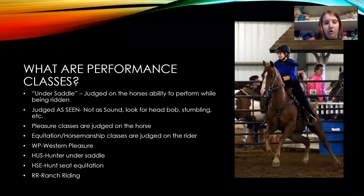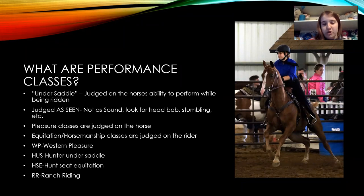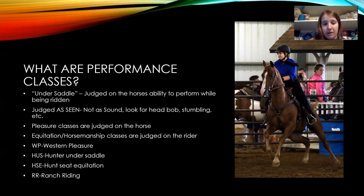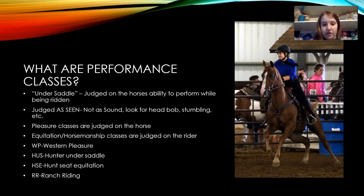There are different types of performance classes. You mainly have your pleasure classes and your equitation classes. Pleasure classes are based on the horse and how the horse is moving, whereas equitation and horsemanship classes are judging the rider. In contests we've had a combination of both classes judged on the horse and on the rider, so I'm covering both types tonight. Common abbreviations we use: WP for Western pleasure, HUS for hunter under saddle, HSE for hunt seat equitation, ranch riding, etc.